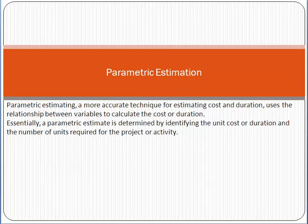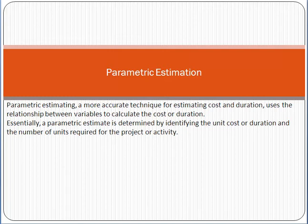What is parametric estimation? Parametric estimation is a concept of estimation based on some calculation and based on some parameters. It is a more accurate technique for estimating cost and duration, and uses the relationship between variables to calculate cost or duration. A parametric estimate is determined by identifying the unit cost or duration and the number of units required for the project or activity.